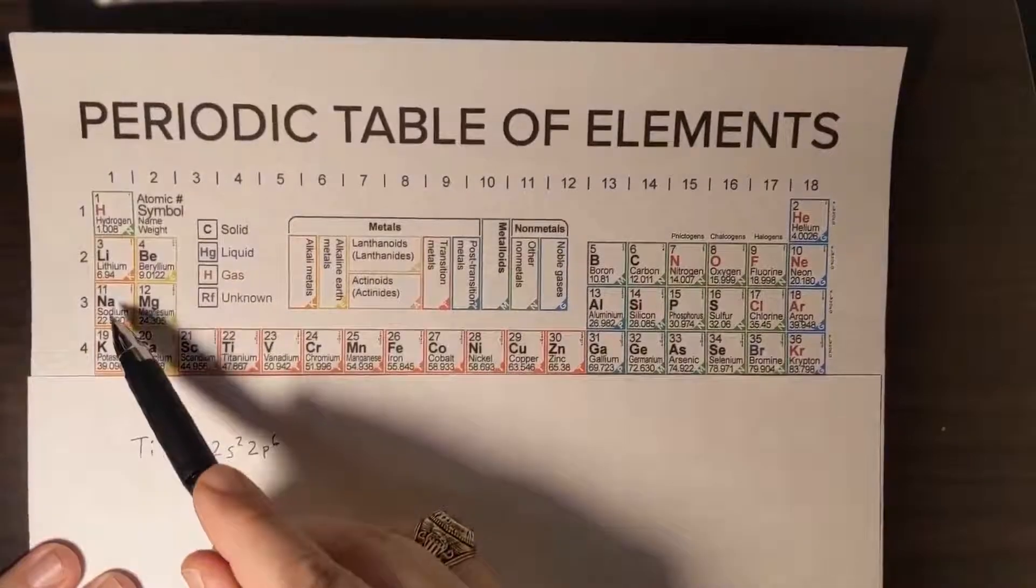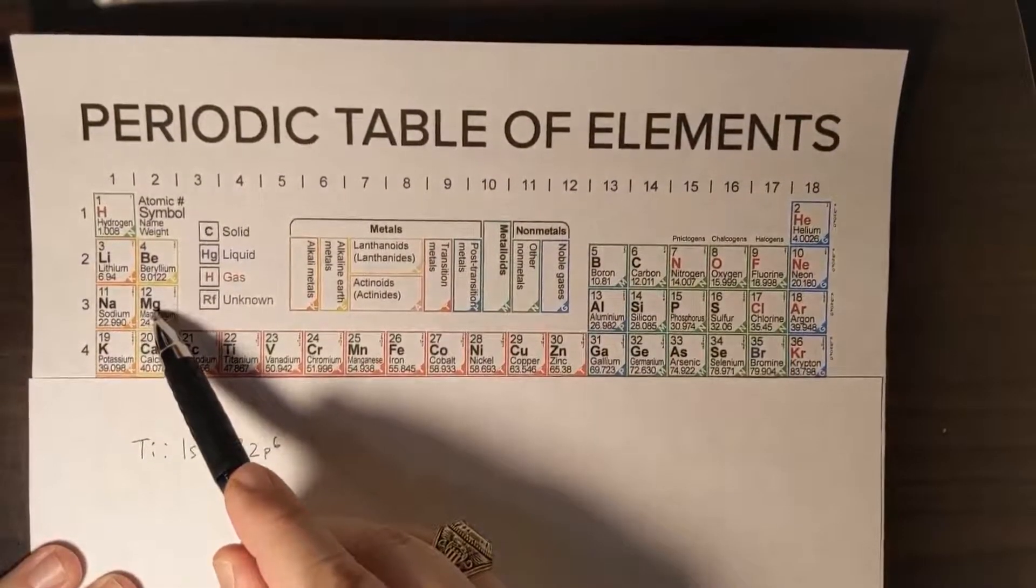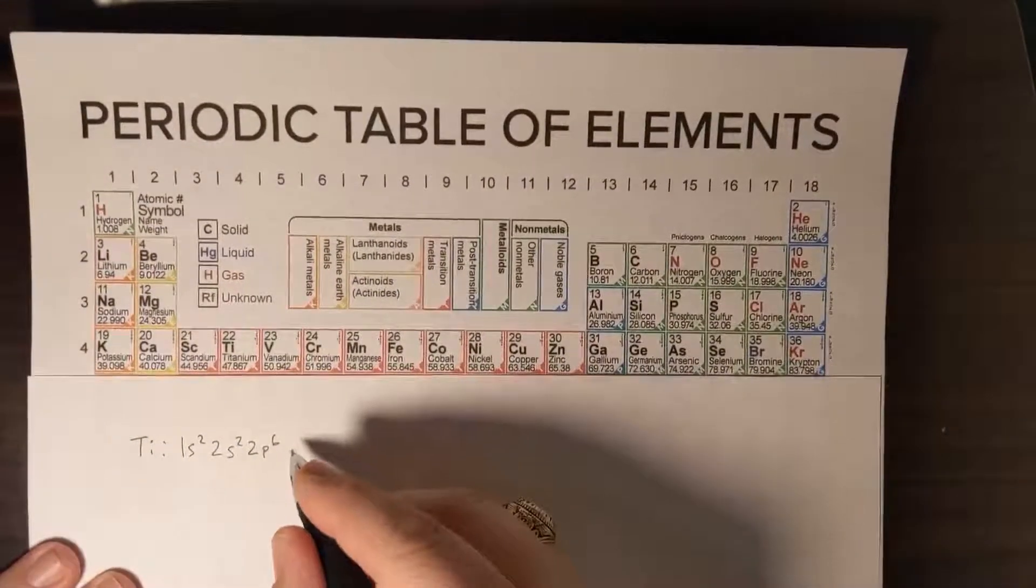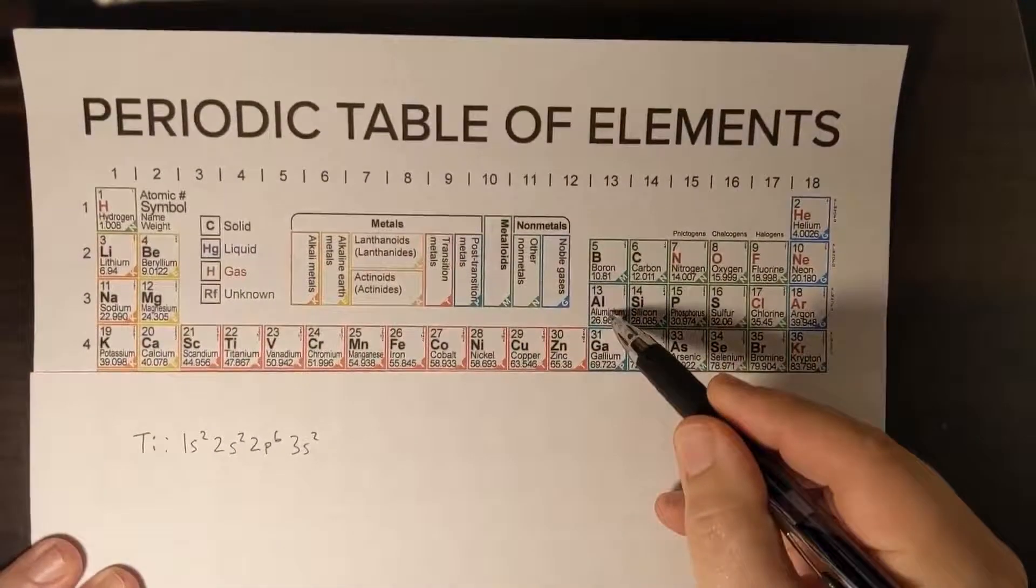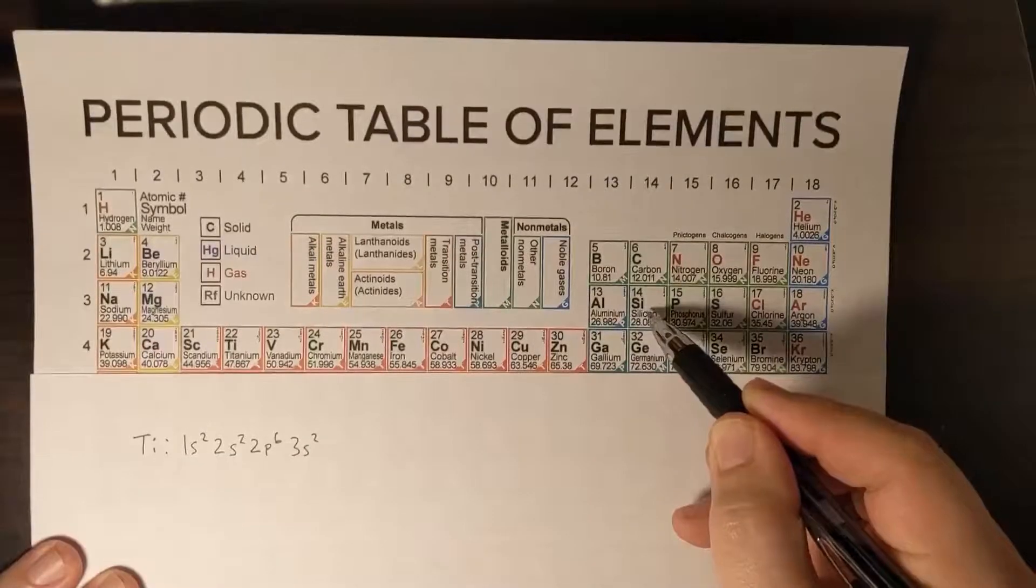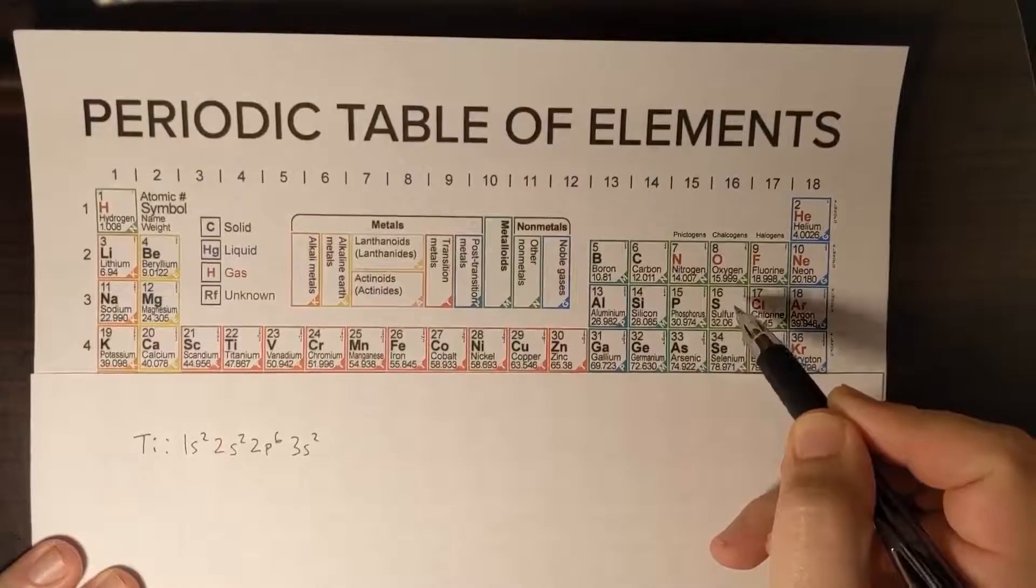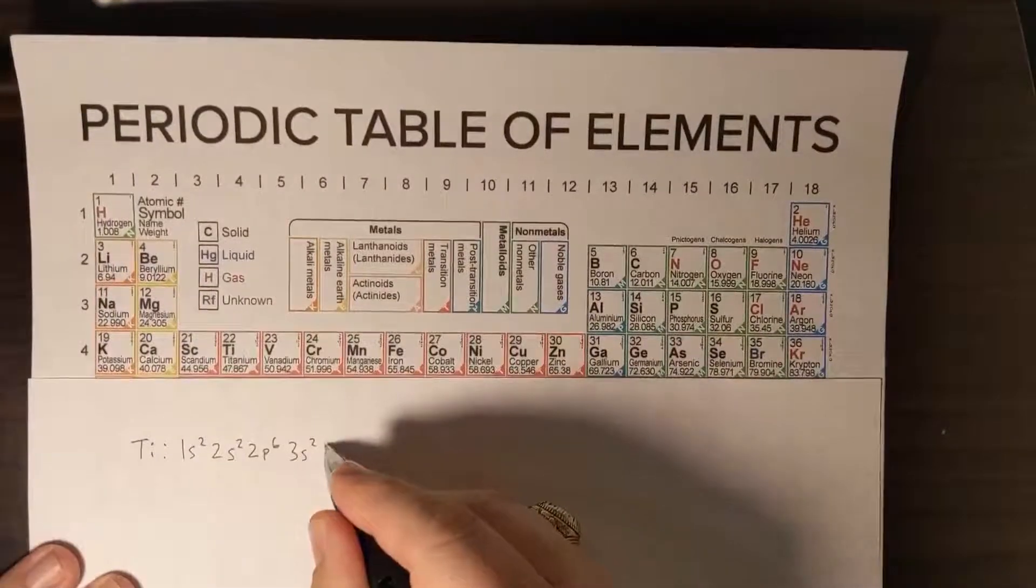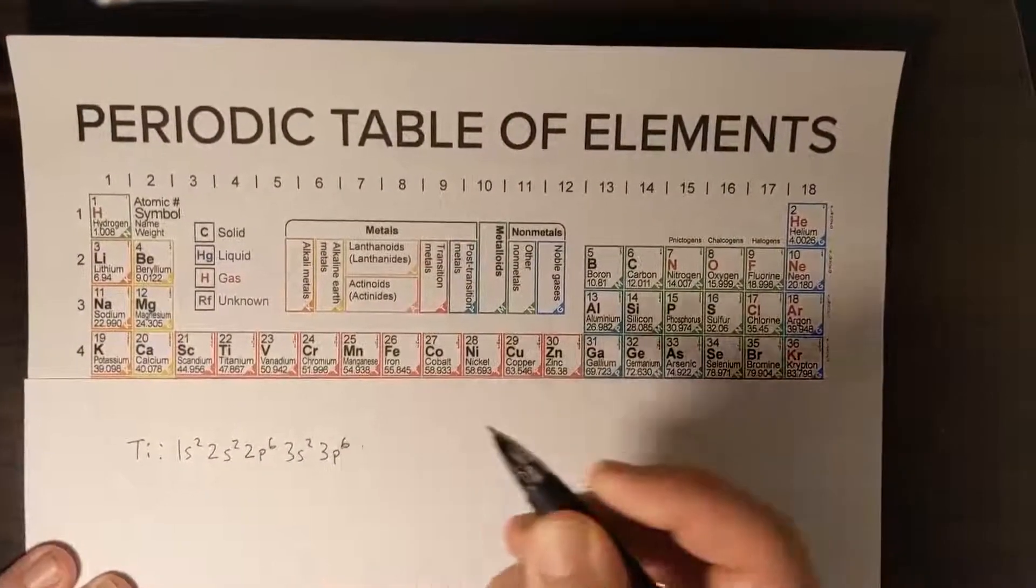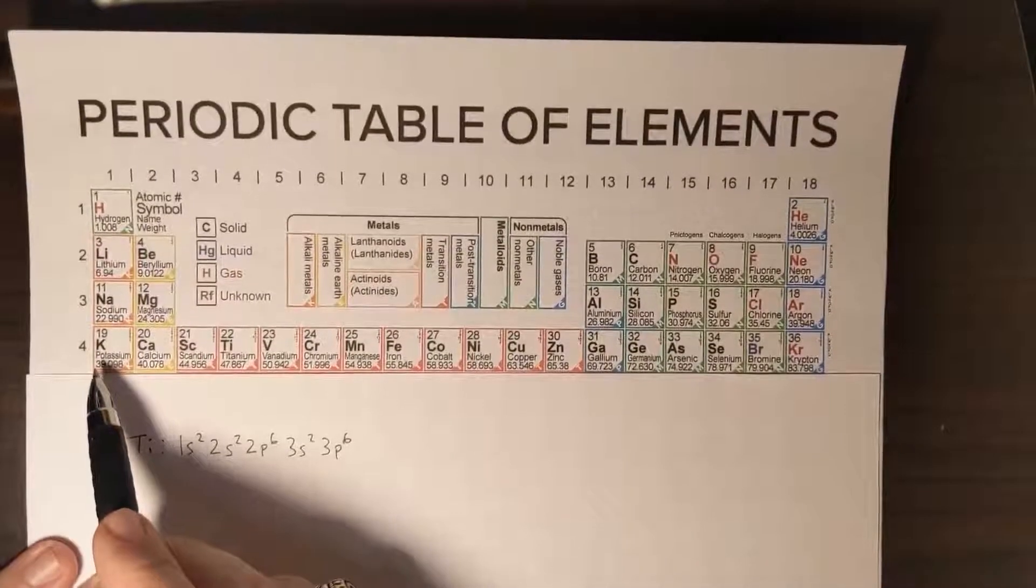Now we come down to sodium: 3s1, 3s2. That ends the 3s orbital. 3p1, 2, 3, 4, 5, 6, so 3p6 will take us all the way over to argon.